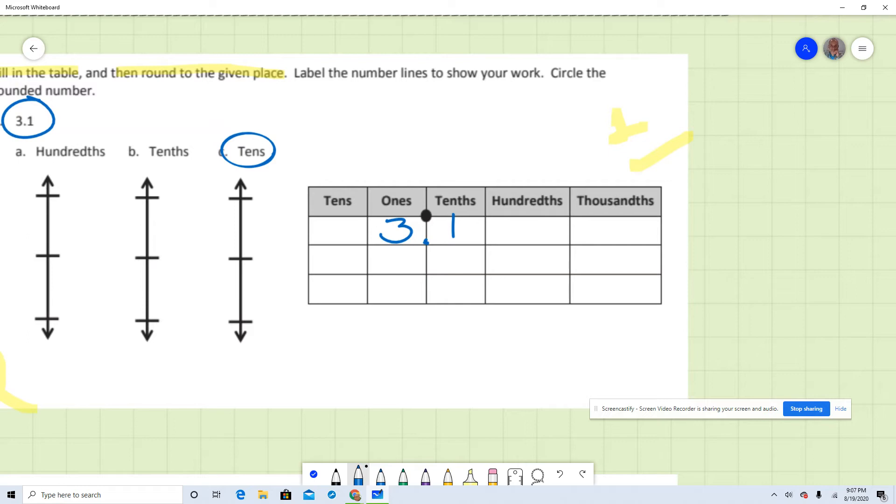The number 3.1 is between two numbers, remember? So 3.1 is between 0 and 10. Remember, we're rounding to tens. So we have to place a 10 in there. Remember that vocabulary. What's the midpoint between 0 and 10? And the midpoint between those two is 5.